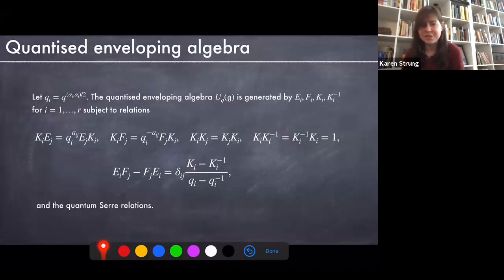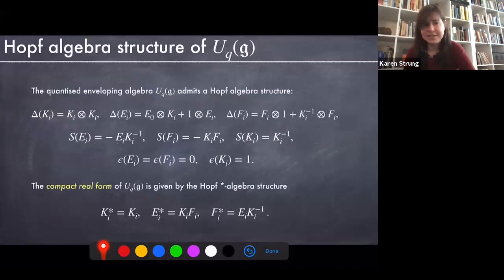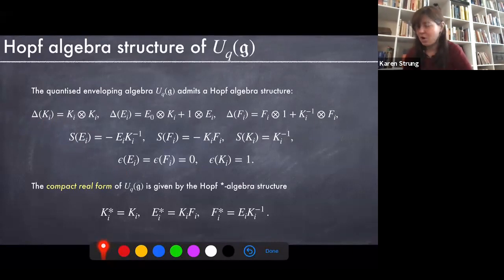These are quite nice objects. Just like the usual enveloping algebra, they admit a Hopf algebra structure — we have co-multiplication, antipode, and co-unit defined explicitly. The reason I asked for Q to be in R was so that we can define a compact real form by putting a star algebra structure on our Hopf algebra.